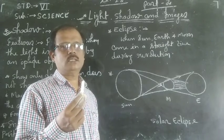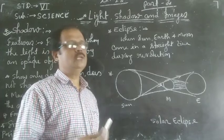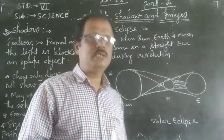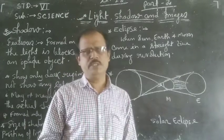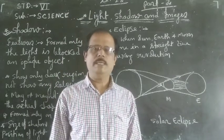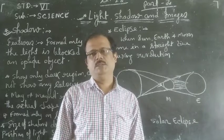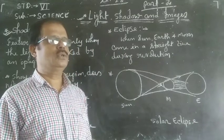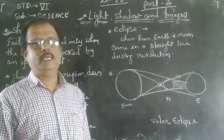It means light does not pass through an opaque object. So when any opaque object comes in front of the light source, it has no capacity to let the light pass through. There is a dark patch behind this object — this is called shadow. It is also black in color.